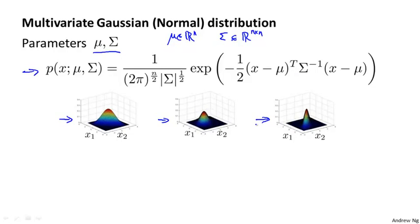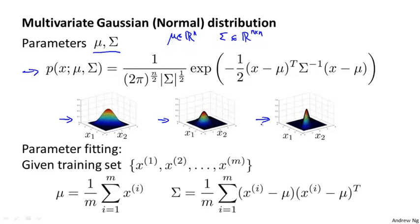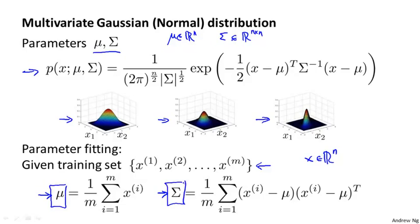Let's talk about the parameter fitting or parameter estimation problem. The question is: if I have a set of examples x1 through xm, where each example is an n-dimensional vector, and I think my examples come from a multivariate Gaussian distribution, how do I estimate my parameters mu and sigma? The standard formulas are: set mu to be just the average of your training examples, and set sigma equal to this formula — which is actually just like the sigma we had when using PCA, or principal components analysis.